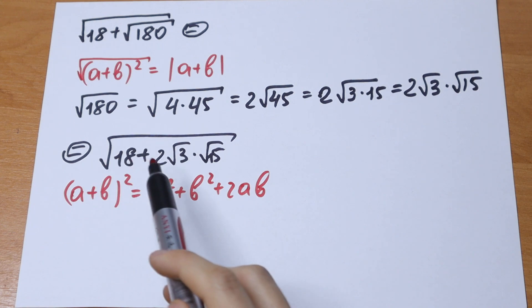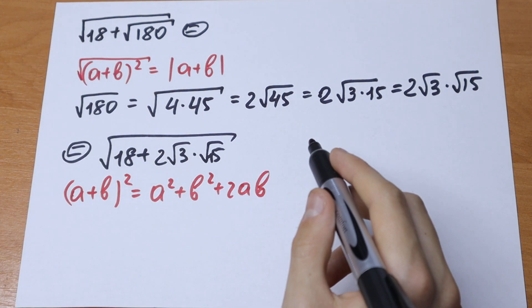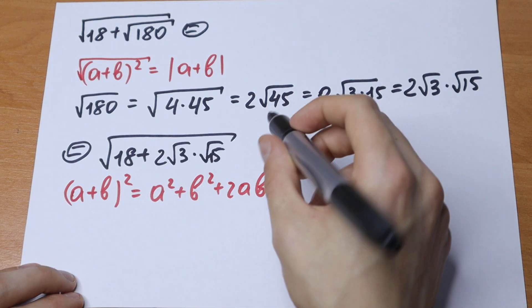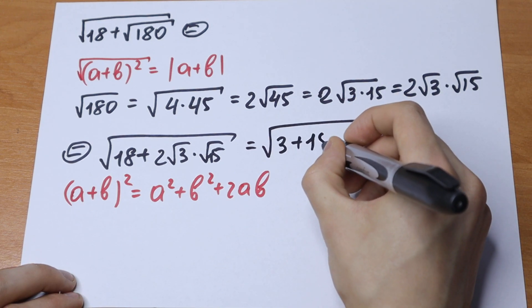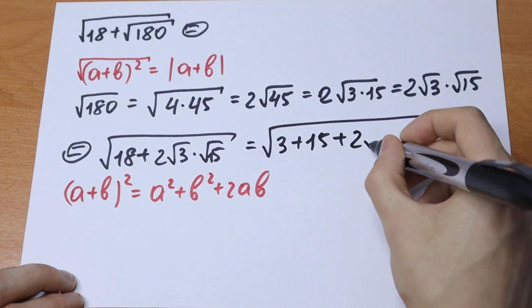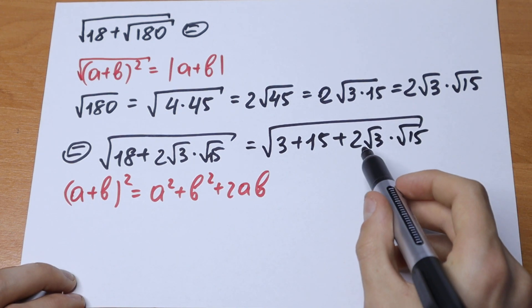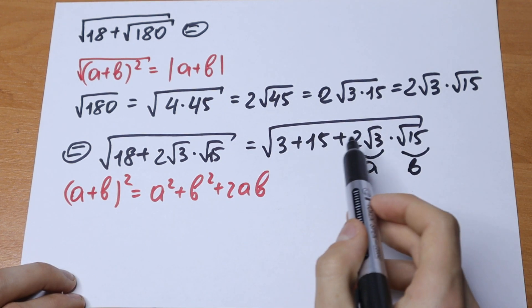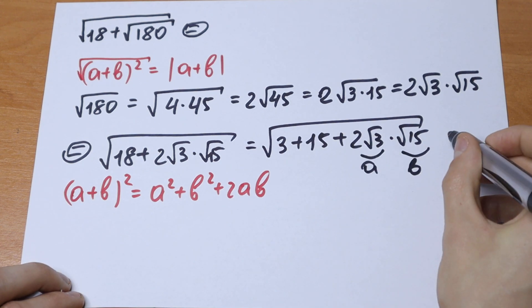But we don't have our a and b on the left, so we need to think how to do this. We have 3 and 15, and we can write this 18 as 3 plus 15 plus 2 square root of 3 times square root of 15. This will be our a and this will be our b, but we don't have something like that on the left side. So how can we do this?